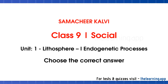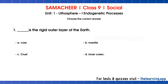Next section: choose the correct answer. First question — dash is the rigid outer layer of the earth. Options: A core, B mantle, C crust, D inner core. Correct answer is option C: crust. The outer layer of the earth is the crust.